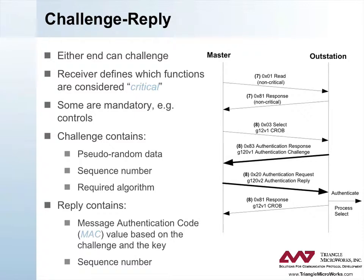This picture shows an example of a select operation. The master transmits the select as a normal DNP3 message. However, instead of transmitting a normal select response, the outstation sends a challenge message using the authentication response function code and the authentication challenge object. The authentication challenge object contains pseudo-random data that both ends must use in their calculation of the message authentication code, or MAC. This random data, along with extended sequence numbers in the messages, helps protect against replay attacks.